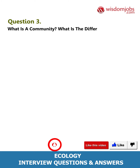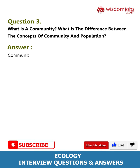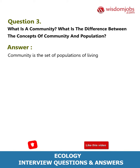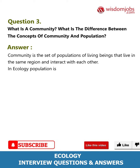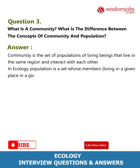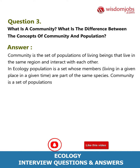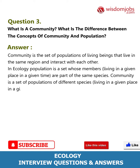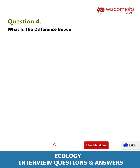Question 3: What is a community, and what is the difference between the concepts of community and population? Community is the set of populations of living beings that live in the same region and interact with each other. In ecology, population is a set whose members, living in a given place at a given time, are part of the same species. Community is a set of populations of different species living in a given place at a given time.